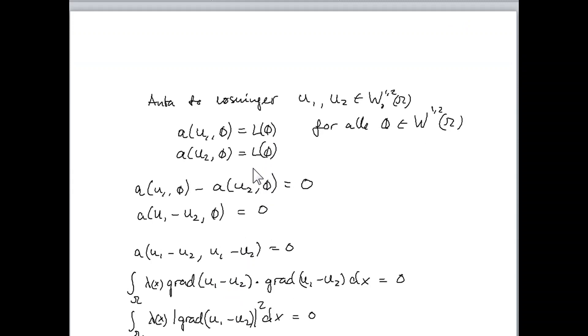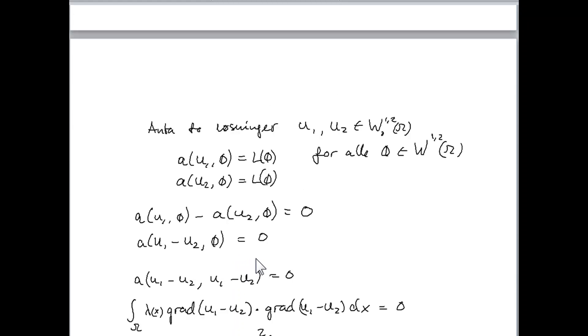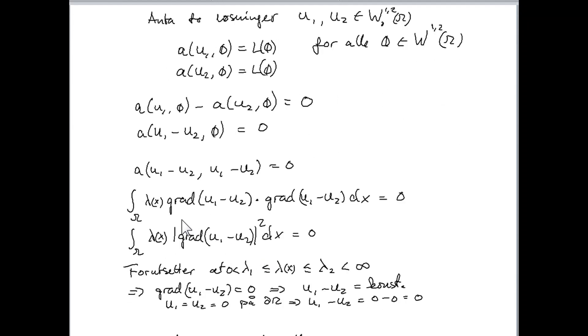When we are subtracting it, we get... Due to the linearity of this bilinear form a, we obtain that this difference can be written like this. And by choosing phi equal to u_1 minus u_2, we obtain just this. Because this is going to be the case for all phi. So it must be the situation when phi is equal to u_1 minus u_2 as well. And just inserting this into the expression for the bilinear form, we obtain that this is the case.